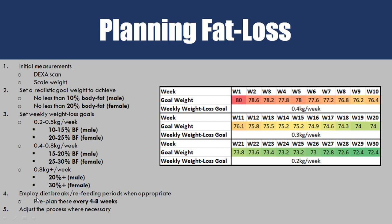Another step is to employ diet breaks or refeeding periods when appropriate — essentially a week or two where you stop your weight loss and just maintain your weight, or even put on a little bit, to give your body a break from the stress. These are best pre-planned every four to eight weeks so you can lose consistently and then have a little break, allowing your body to reset before continuing with less resistance. Always adjust the process as necessary to see if it's too much or not enough.